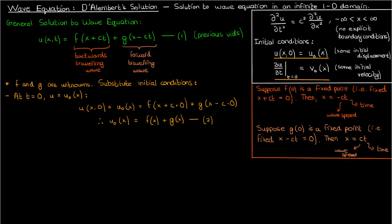Let's now apply the other initial condition. At t equals 0, the partial of u with respect to t is v0 of x. But first, we'll need to find the partial of u with respect to t. The partial of u with respect to t can just be found from a simple application of the chain rule.